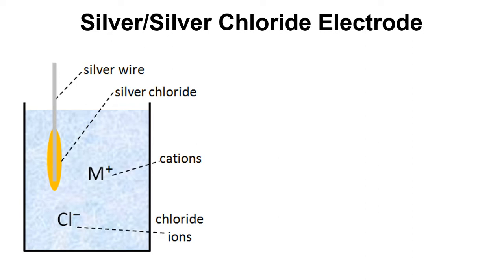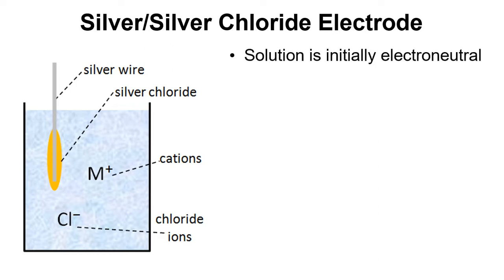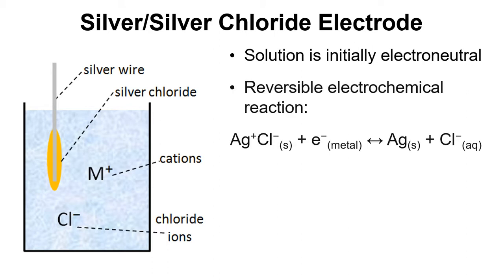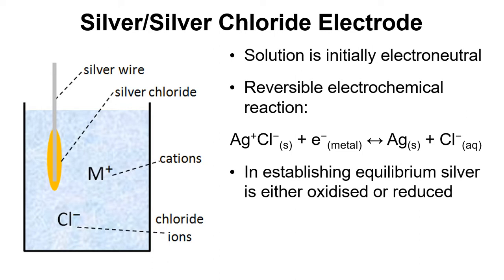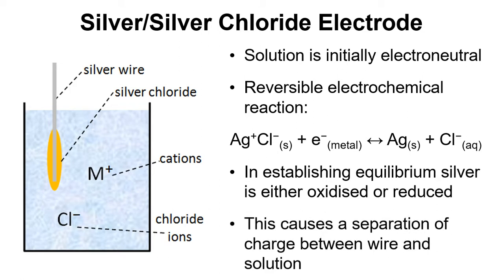This is where we have a silver wire coated in silver chloride and then it's dipped into a solution of chloride ions and cations. Initially the solution is electroneutral, so there are enough cations to balance out the negative charge of the chloride ions. Once we put the silver wire in with the silver chloride coating we get a reversible electrochemical reaction occurring: silver chloride can react with an electron to form silver metal plus a chloride ion. Once we establish the equilibrium, silver metal is either oxidized or reduced and this causes a separation of charge between the wire and the solution, leading to a potential difference.